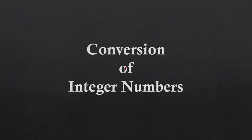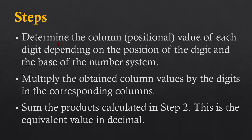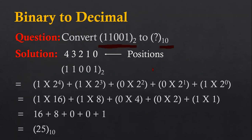Going back to the steps — the first step says: determine the column value of each digit depending on the position of the digit and the base of the number system. So we have identified the position of each digit and its positional value, and the base of the number system. The position values are identified and the base of the number system is 2.